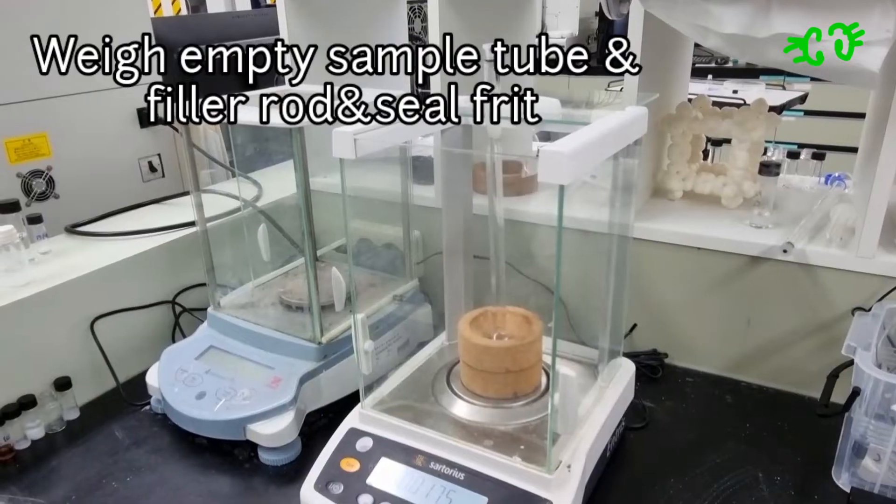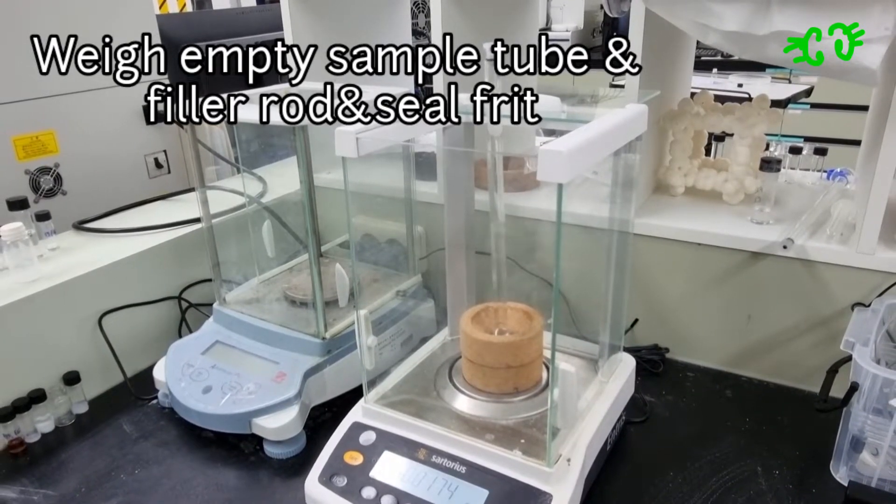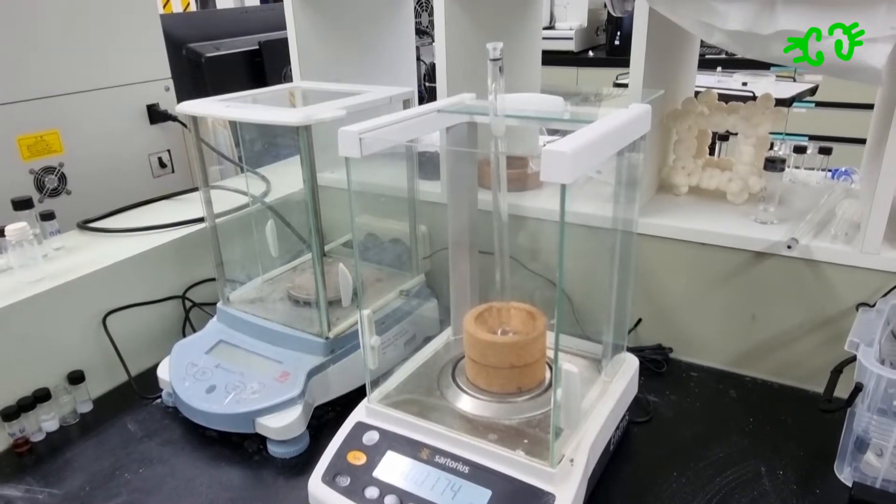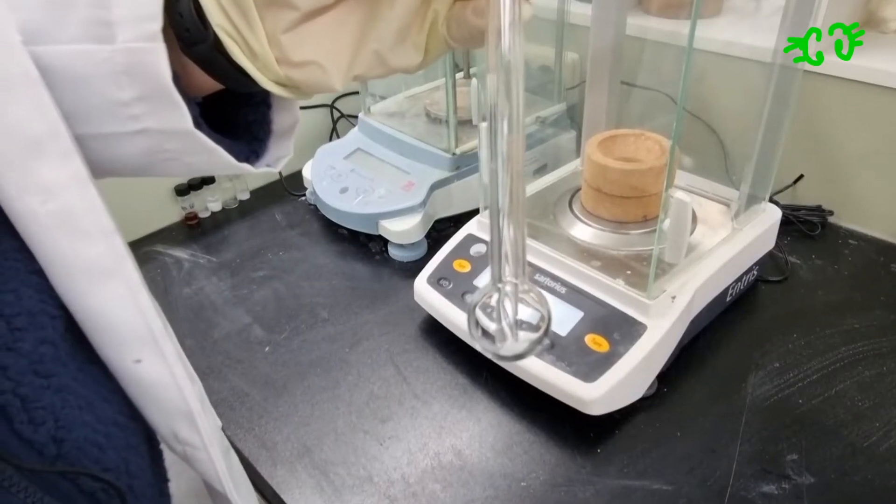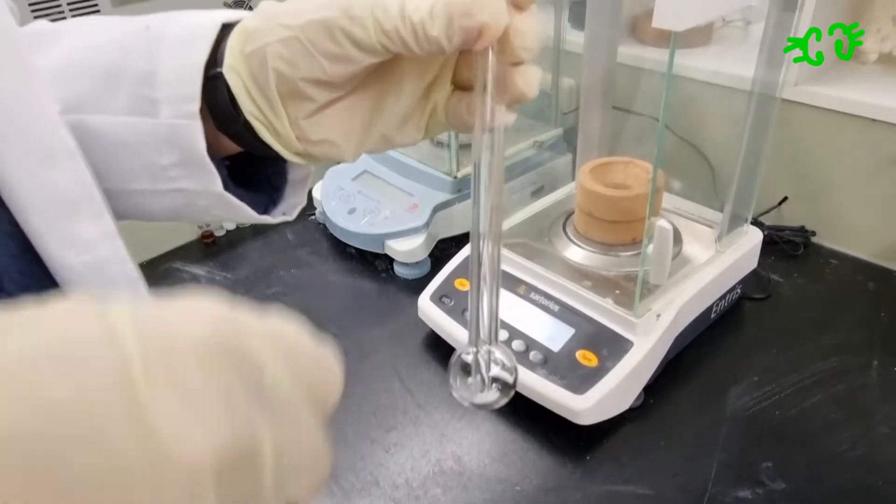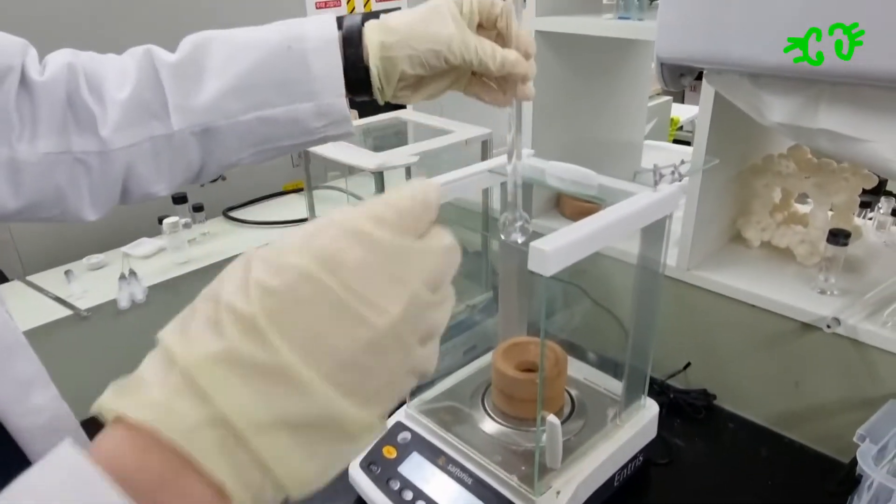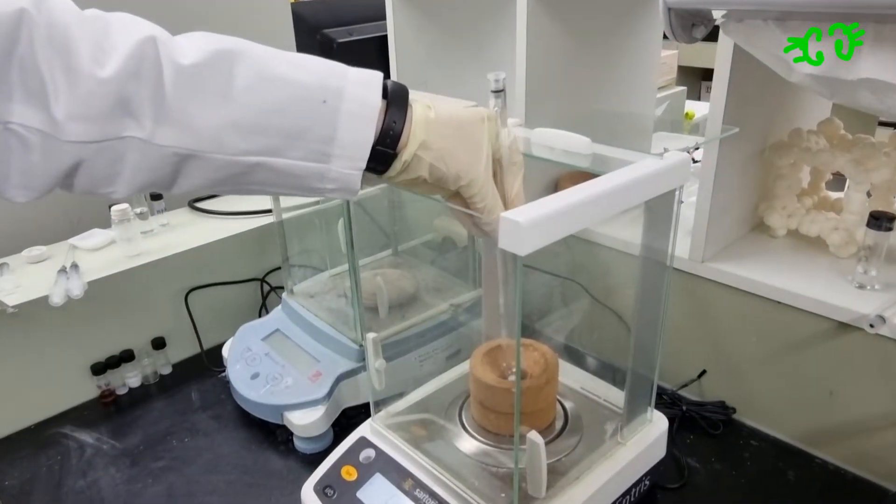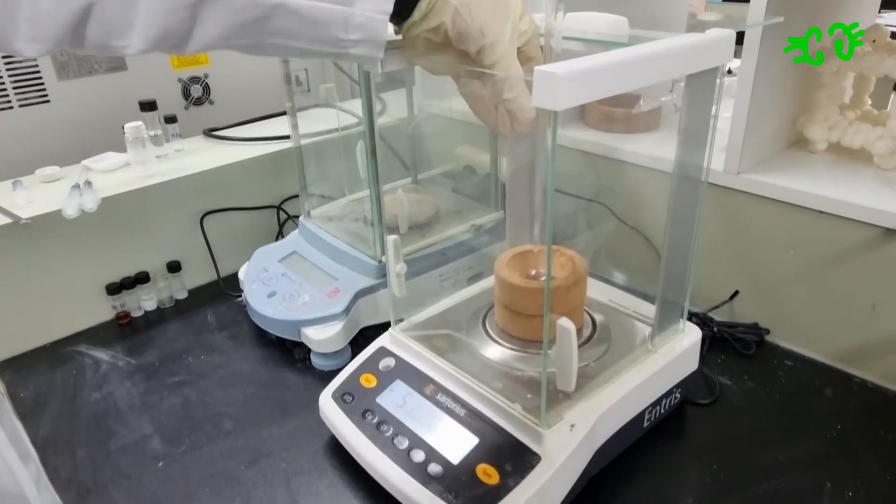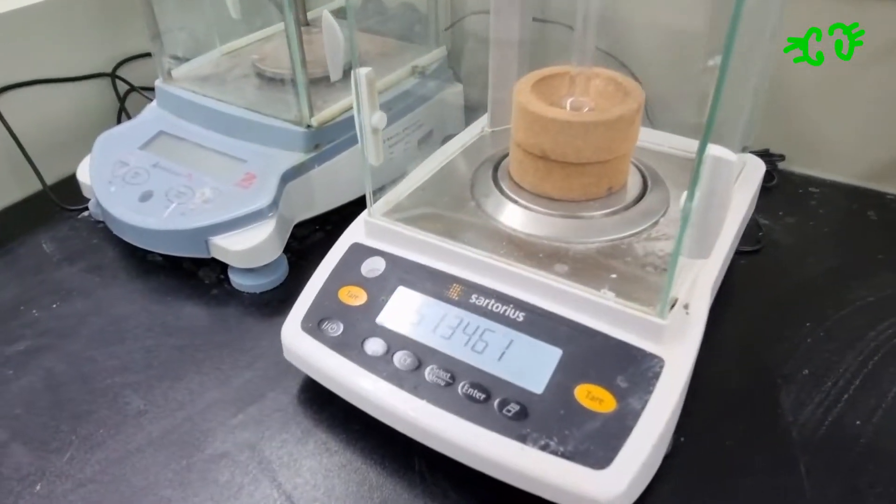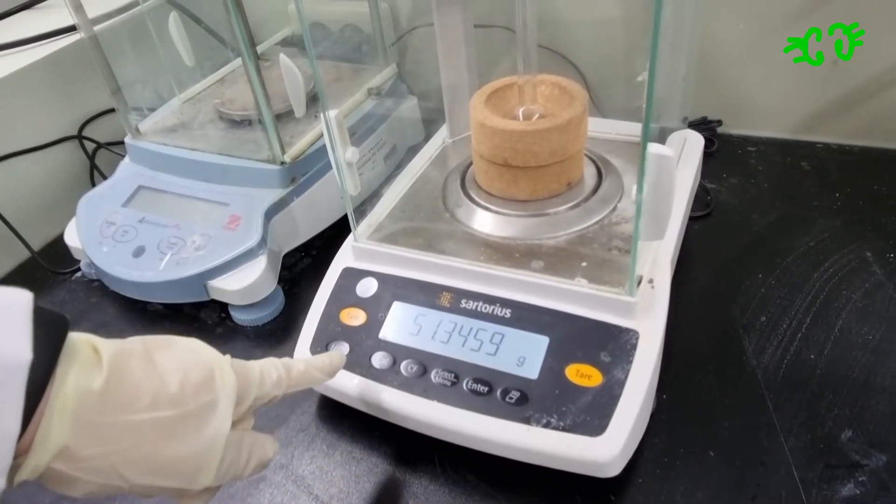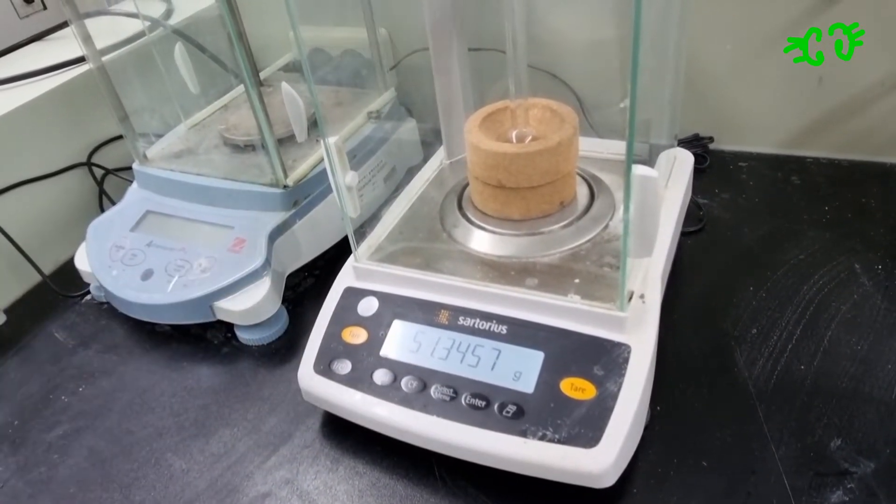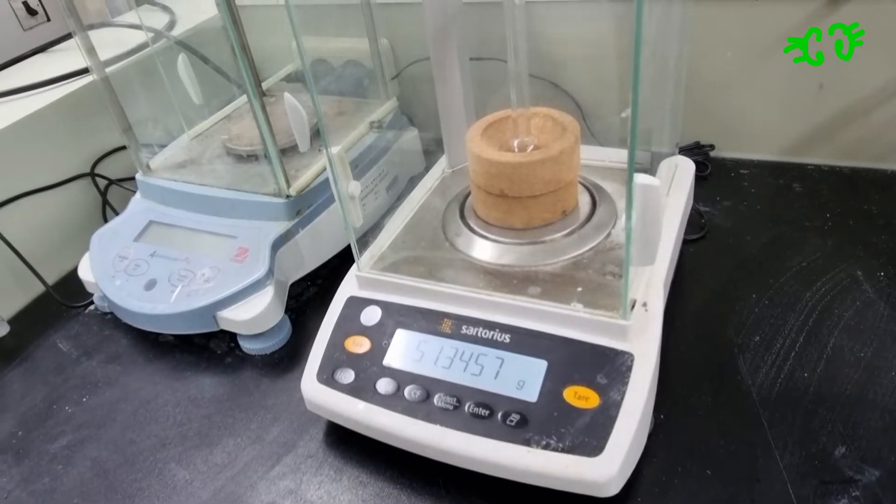First, we should weigh an empty sample tube with silica and filler rod in it. After adding sample into the sample tube, we should measure it again. We should subtract the empty sample tube mass from this and put it in the computer.